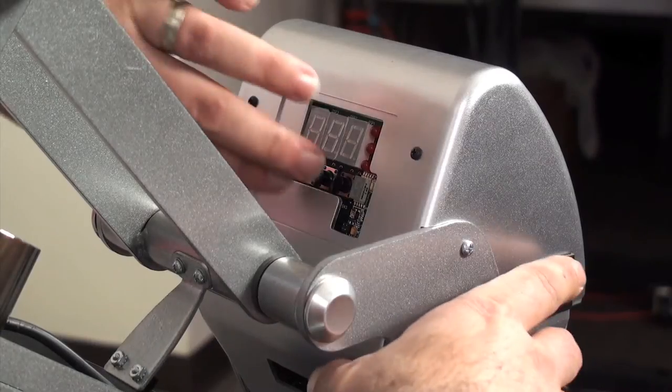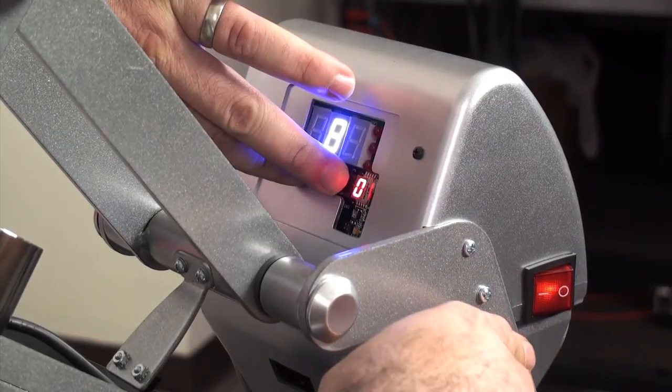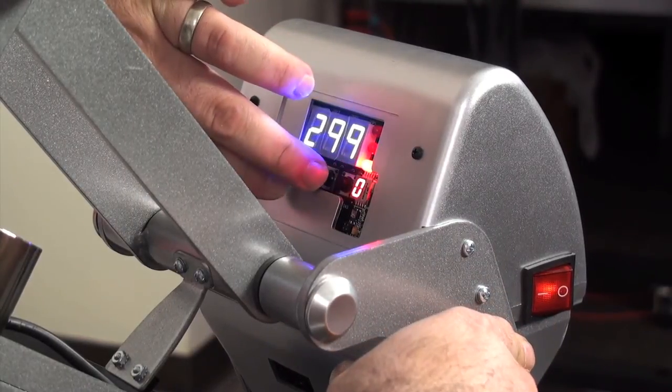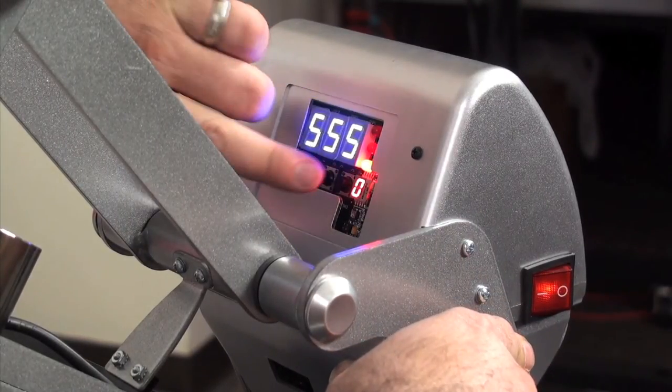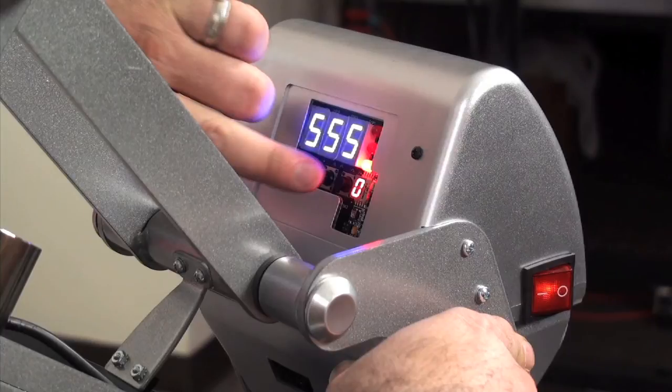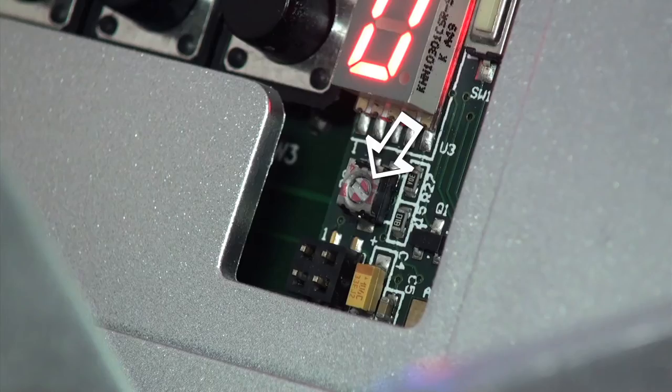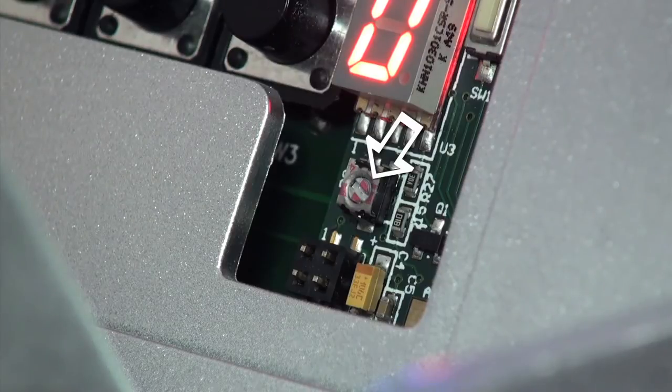Hold in the plus and minus buttons at the same time and turn the press on. Once the press powers up, release the plus and minus buttons, press the center mode button, and the display should read 555. Here is the pressure adjustment screw we will be working with.